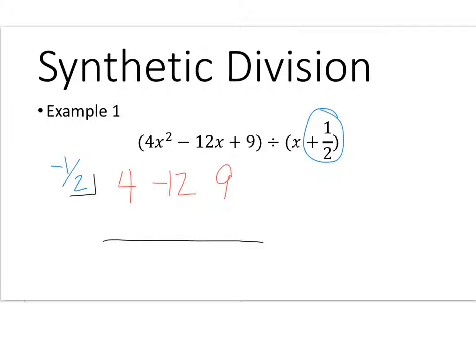What we're going to do is I'm going to bring down this 4 below this line. Anything below this line is going to get multiplied by the divisor. So negative one half times 4 is negative 2.